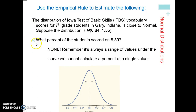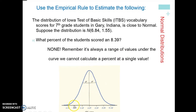What percent of students scored exactly 8.39? That answer is none. Whenever we're talking about the normal curve, we're dealing with area under the curve — it's always a range of values. For a single value, you'd get the height but there's no width to multiply by. So using the normal curve, you can never calculate a percentage for just a single value — it always has to be a range.